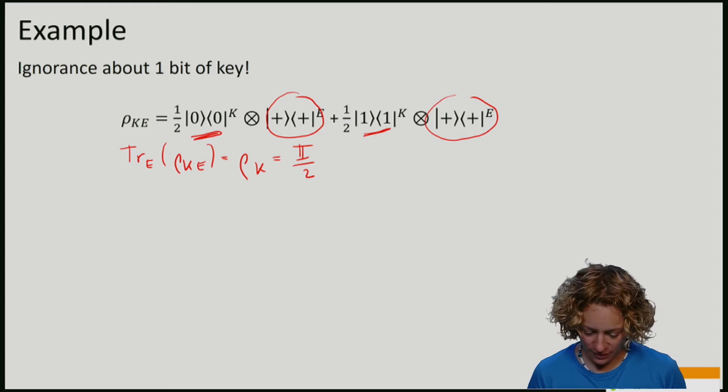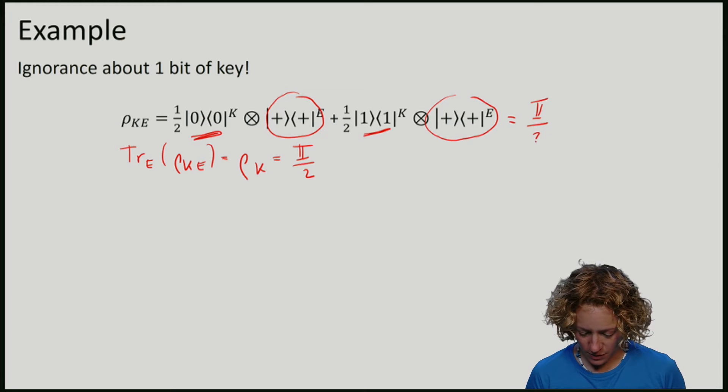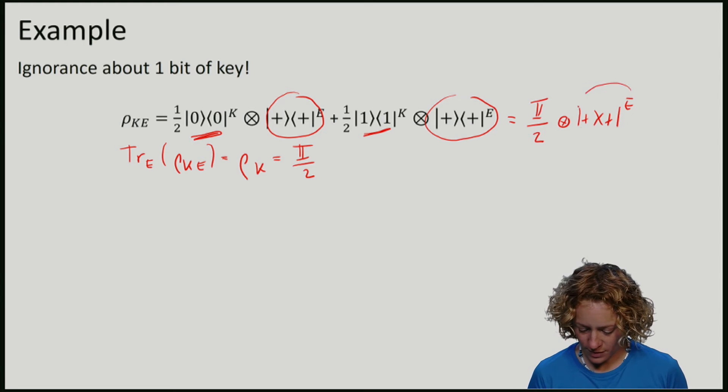So this means that I can write this state as the maximally mixed state on K tensor the plus state on E. So this here is ρE.